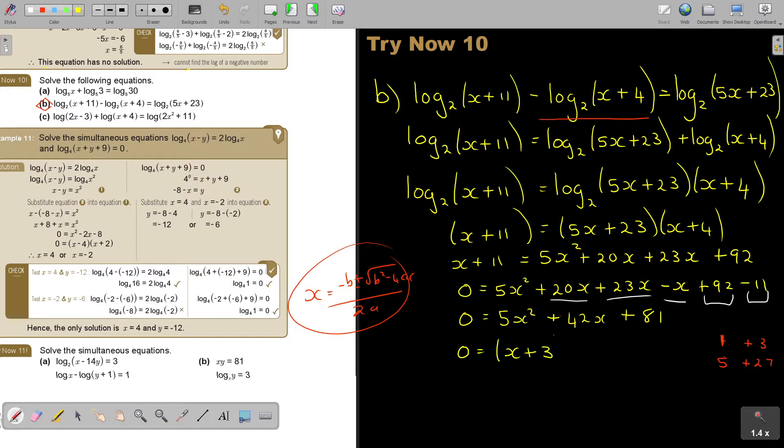But now I factorize it. So it's (x plus 3) and it's (5x plus 27). And I solve it, and I say it's x plus 3 equals 0, or 5x plus 27 equals 0. So x is equal to negative 3, or x is equal to negative 27 over 5.